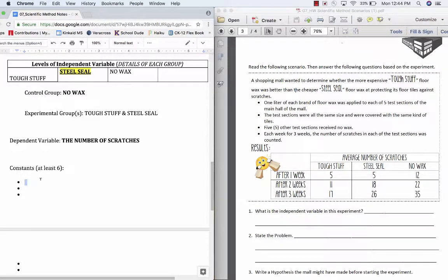But we haven't yet talked about the constants. Constants are things in an experiment which help keep it fair, meaning that one group doesn't have a better advantage than the other group. So there are things that we want to keep fair to ensure that each group is getting a fair test. For instance, you may have noticed that they applied one liter of each brand to be fair, because if you applied more than one liter, you might get different results. So one liter of wax. It was at the same mall. What else was the same? Each group had five test sections.